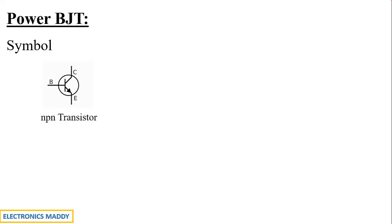BJT stands for bipolar junction transistor. The symbol for the NPN configuration has three terminals: base, emitter, and collector. The arrowhead indicates the configuration type — for NPN it points toward the emitter terminal, and for PNP it points away from the emitter terminal. Throughout this analysis we will only refer to the NPN transistor to avoid confusion. An important observation is that the symbol of a normal BJT and a power BJT is quite the same — there is no difference as far as the symbol is concerned.